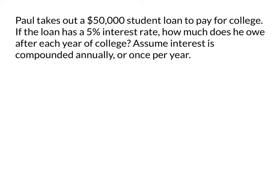Now let's write down some information that we know. First, the amount that we are borrowing, which is called our principal, P, is $50,000. Second, the interest rate, R, is 5%, or written as a decimal, 0.05. We're going to find how much he owes after 1 year, 2 years, 3 years, and 4 years.